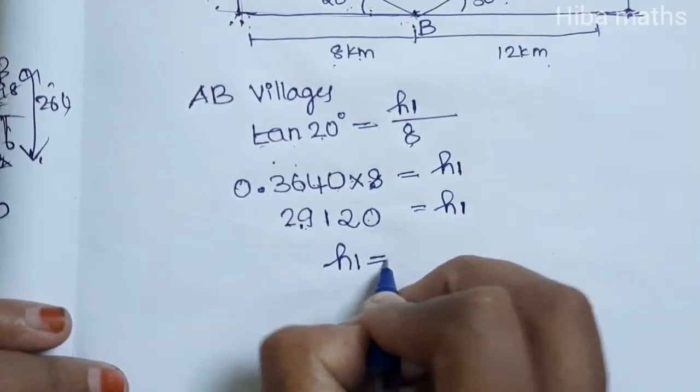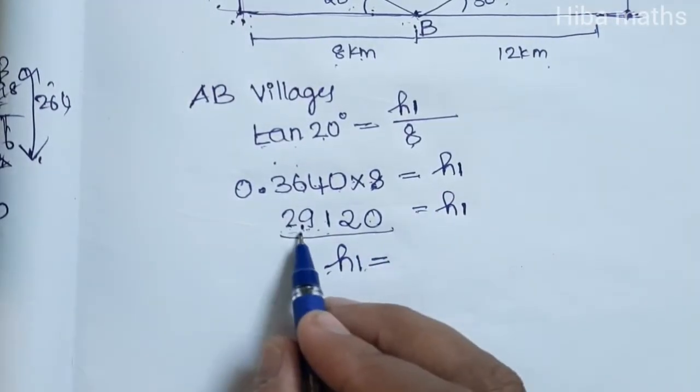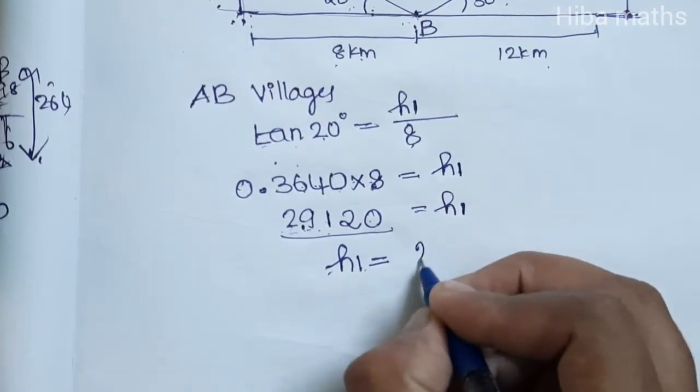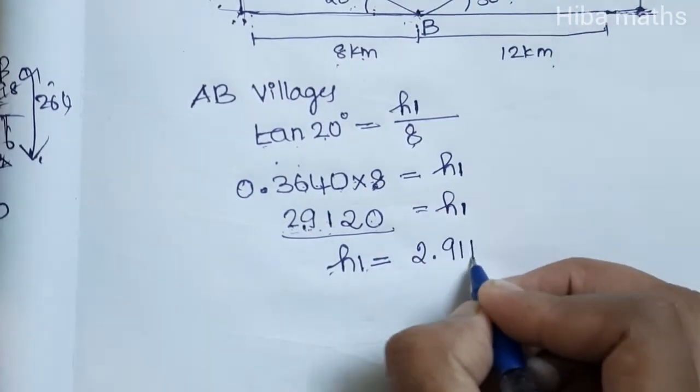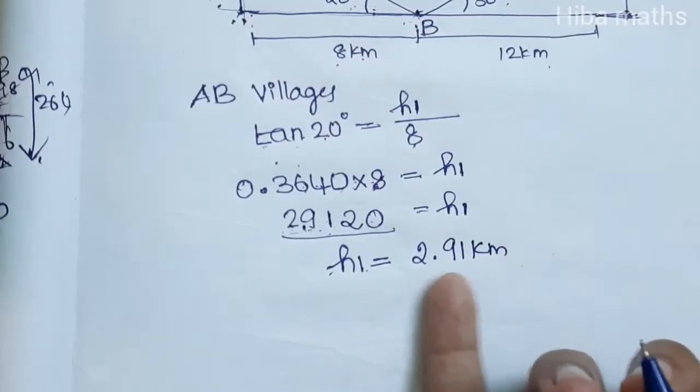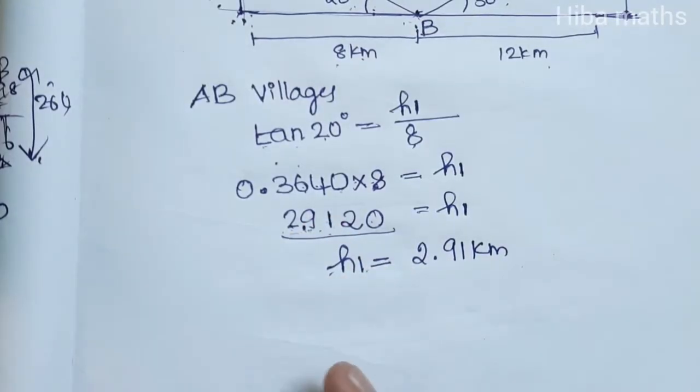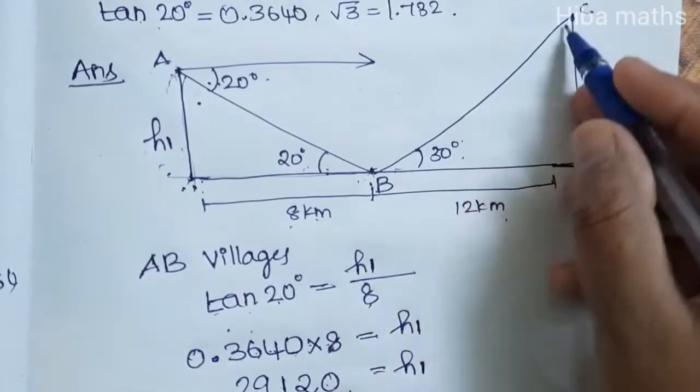Rounding up, h1 is equal to 2.91 km. Now for BC, we need to find the height.